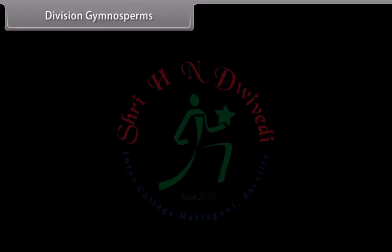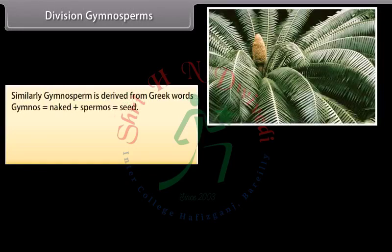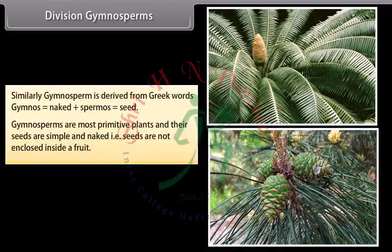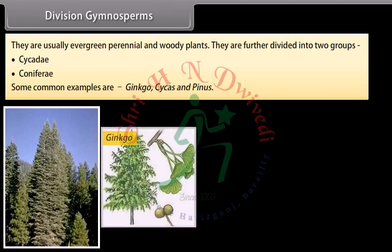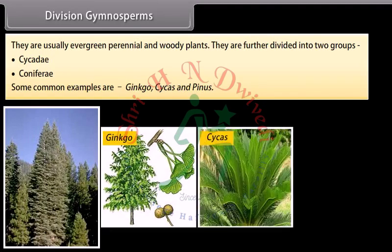Gymnosperm is derived from Greek words 'Gymnos' meaning naked, plus 'Spermos' meaning seed. Gymnosperms are the most primitive seed plants and their seeds are simple and naked, that is, seeds are not enclosed inside a fruit. They are usually evergreen, perennial and woody plants. They are further divided into two groups: Cycati and Coniferae. Some common examples are Ginkgo, Cycas, and Pinus.